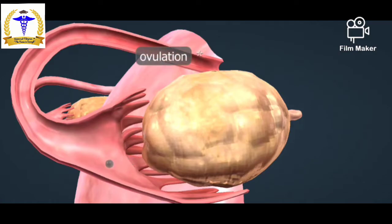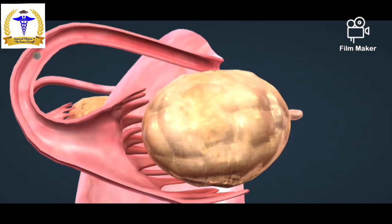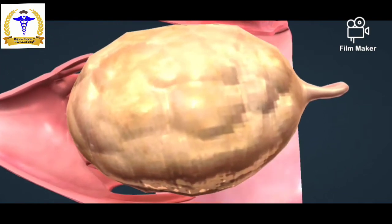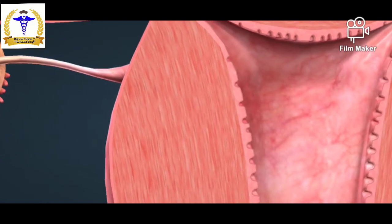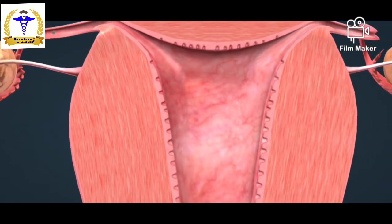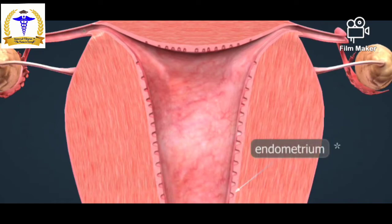During ovulation, the mature egg is released from the ovary. It enters the fallopian tube and travels towards the uterus. The embryo then attaches to the endometrium, which becomes thick after ovulation in preparation for the embryo.